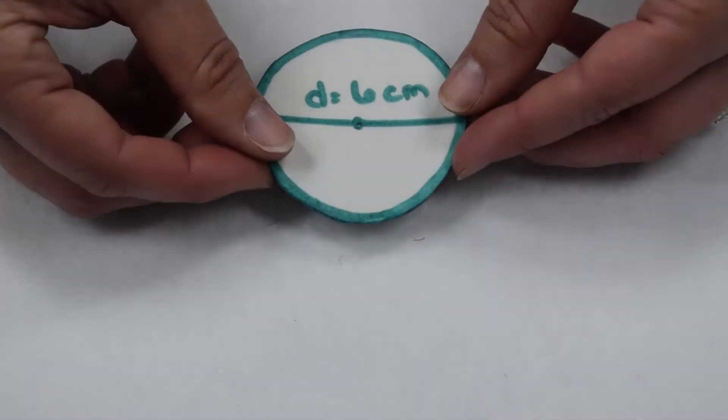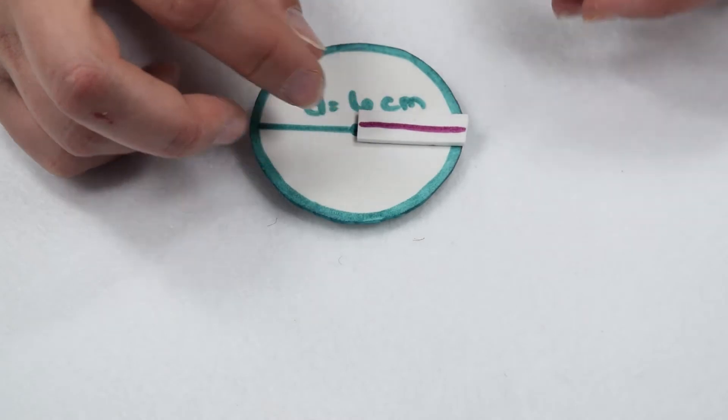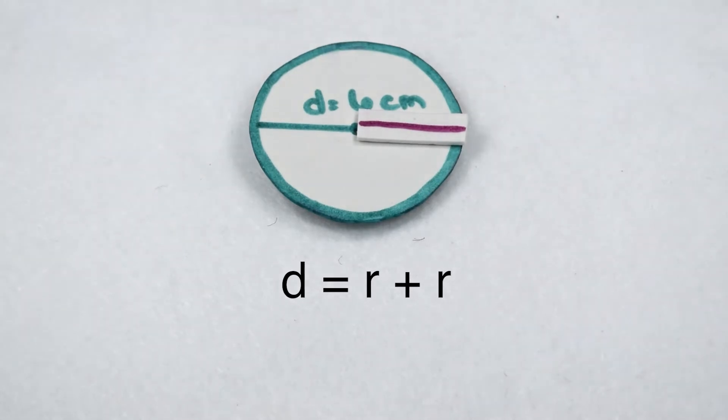Now let's go the other way, and this time we're going to start with a diameter of six centimeters. We're going to go ahead and cover our diameter with one radius. And when we do, we can see it's going to take us two radii to get from one edge through the middle to the opposite edge.